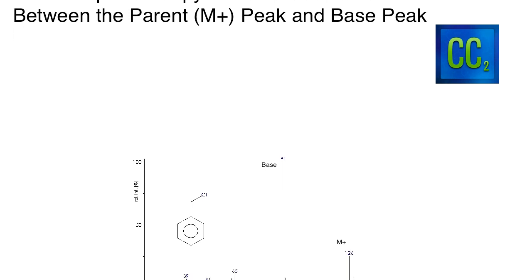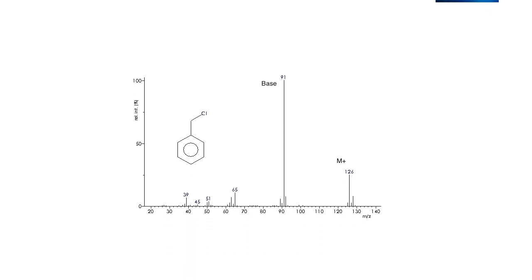Here is an example of a mass spec. You can see this is for benzyl chloride. The parent peak, or what's known as the M+ peak, is this one right here at 126, and then the base peak is here at 91.